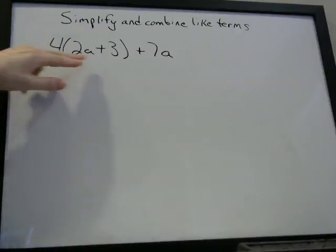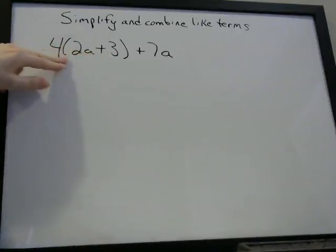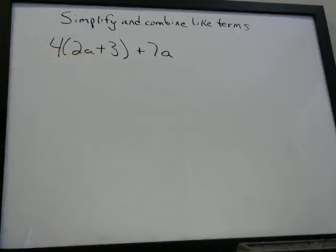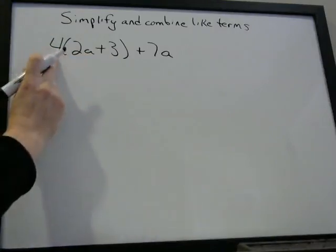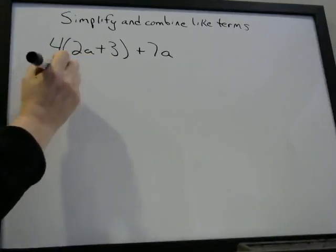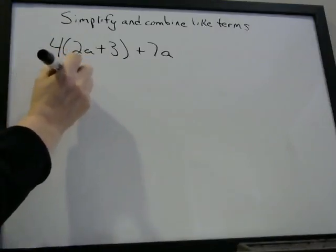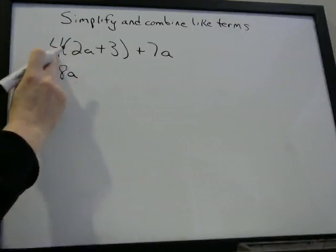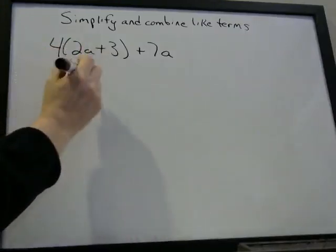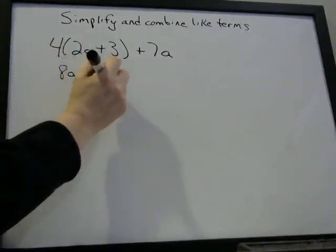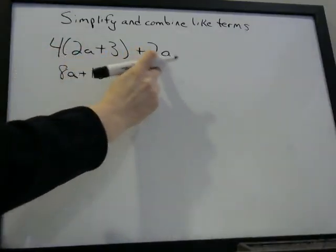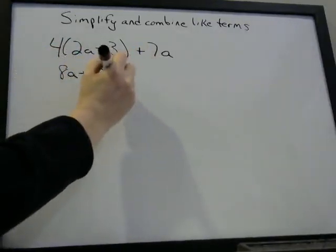So first we're going to use the distributive property. We go 4 times 2A — that's 8A — 4 times positive 3 is 12, plus 7A.